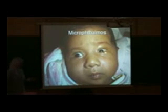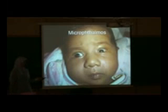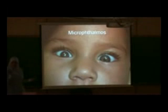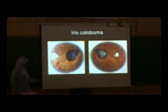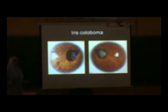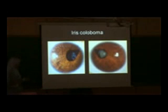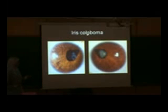Congenital cataract may be associated with a small eyeball and small cornea, and we call this microphthalmia. If you look at this eye, it is smaller than the other one; if you measure the eyeball it is going to be smaller. Congenital cataract may also be associated with other congenital anomalies like coloboma of the iris — here there is a lot of the iris missing. We call this iris coloboma.